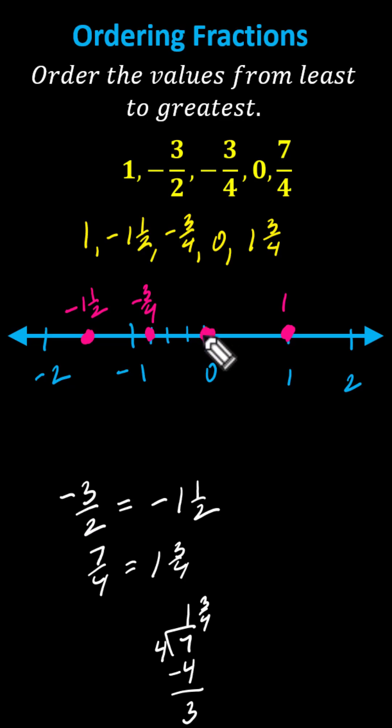Finally, we have 1 and 3 fourths, which is between 1 and 2. Let's break the interval from 1 to 2 into 4 equal parts, so we can count by fourths. We have 1, 1 and 1 fourth, 1 and 2 fourths, and 1 and 3 fourths.